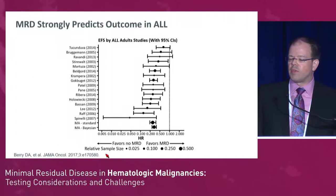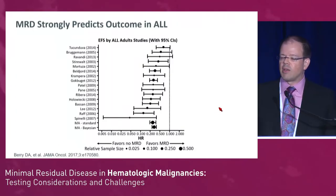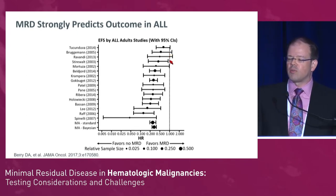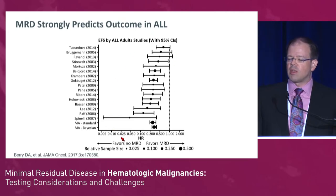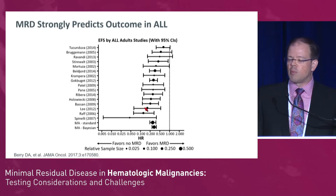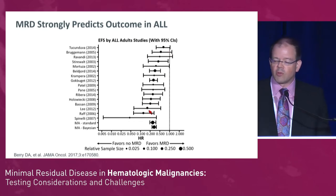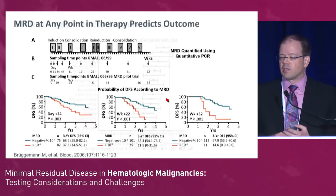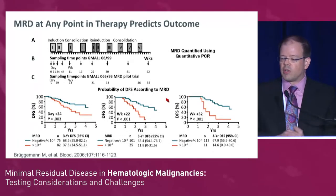All of the adult studies incorporated in this meta-analysis show that even though there were different technologies and different thresholds of MRD assessment, there is no equivocation. Every single study demonstrated a more favorable outcome for patients who achieved MRD negativity after their initial few cycles of chemotherapy. This is very clear to us now.